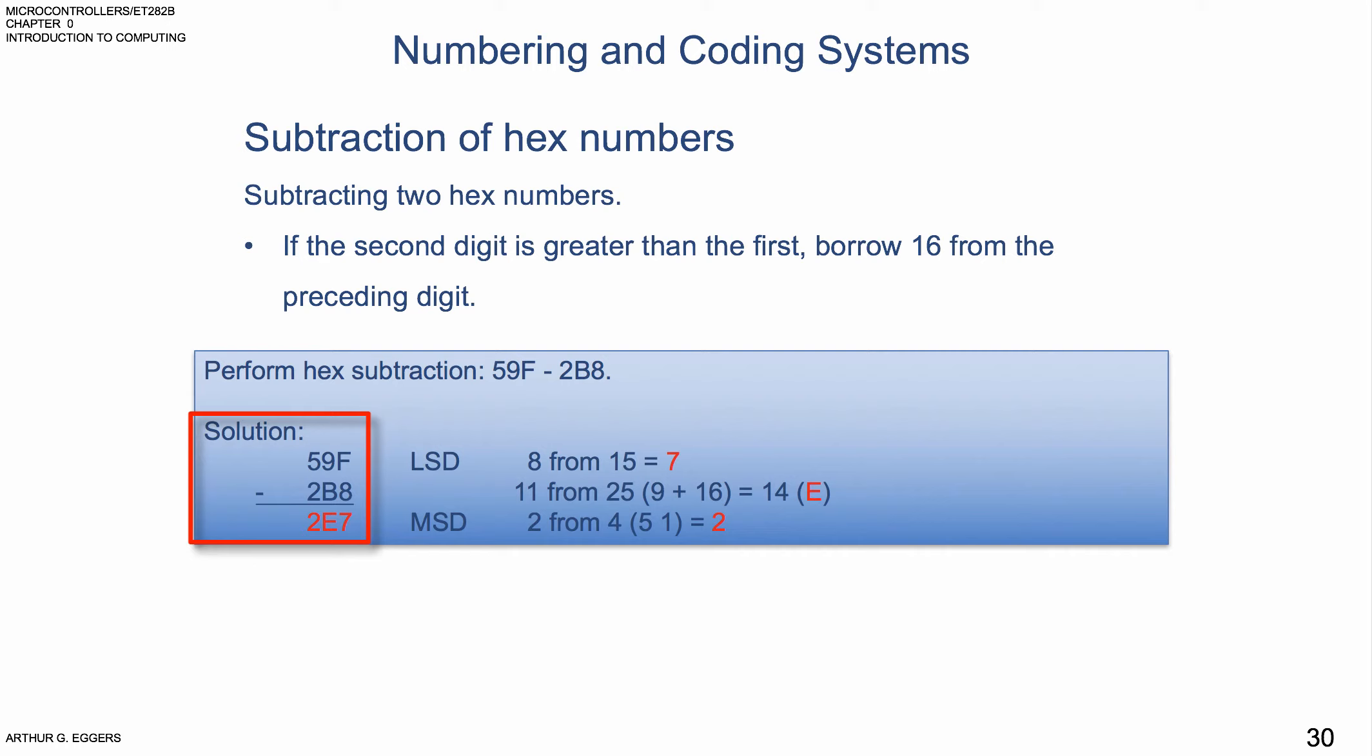We're going to subtract 8 from 15, because we know F is 15, we get a 7. In the next column, we're going to subtract 11, which is B, from 25, which is 9 plus 16, because we borrowed 16. That gives us a value of 14, which we know is a hex E. And then finally, we're going to subtract 2 from 4, which is 5 minus 1, which gives us a value of 2. So in hex, our answer then becomes 2E7.